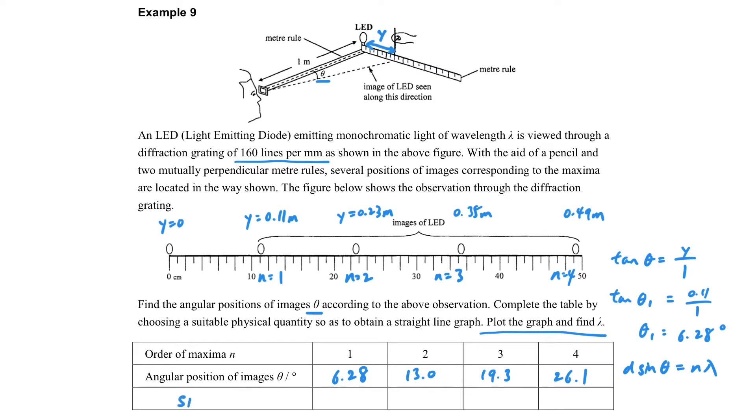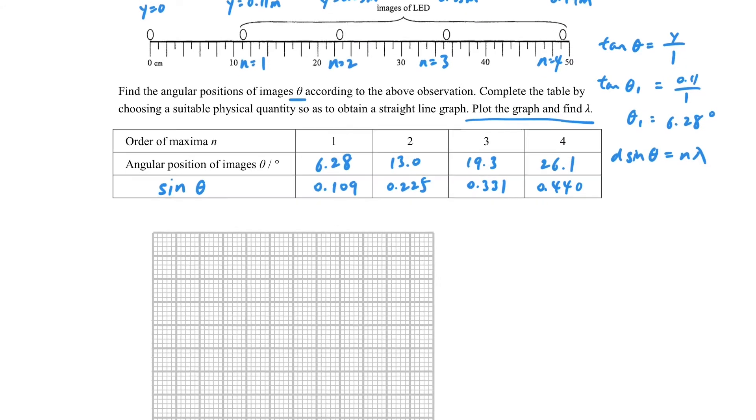We know to plot the graph to find the lambda, so what kind of information do we need? Most probably we use d sin θ = nλ. That's why the last row is for the sin θ.